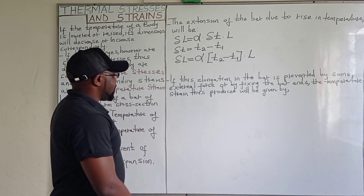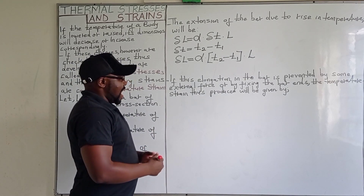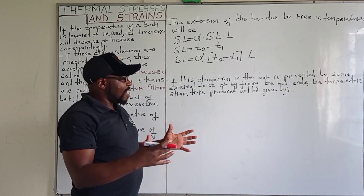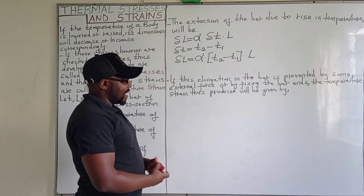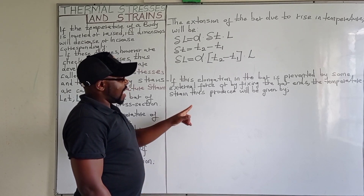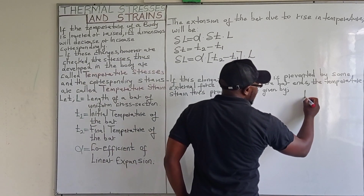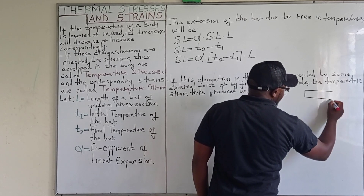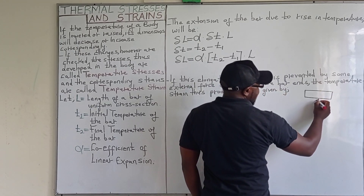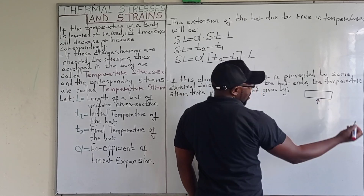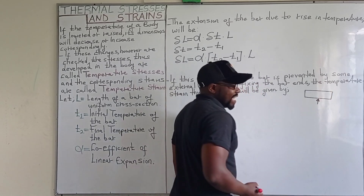On the other hand, if this elongation in the bar is prevented either by an external force or by fixing the bar ends, the temperature strain thus produced will be given by the following. If we have a bar whose temperature is either raised or lowered — let's say we raise the temperature of this bar by heating it —